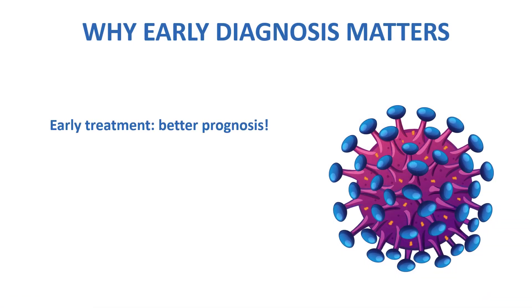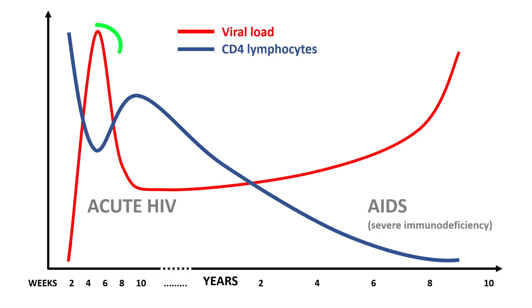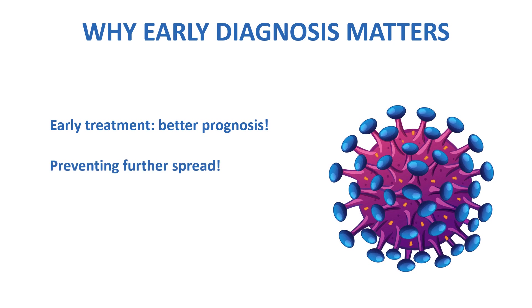Because with early treatment, our patients will have a much better prognosis. But not only that — it's extremely important for our patients to know that they are infected, because this early, in this acute stage, the virus is especially transmissible. The viral load is extremely high, much higher than it will be just a few weeks after that, once it reaches the chronic state. So yes, being able to diagnose acute HIV infection is an essential skill for a clinician who works in acute care or primary care.